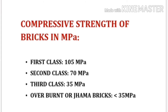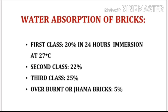Compressive strength of bricks in MPa: first class brick is 105, second class brick is 70, third class brick is 35, and for overburnt or jama brick it is less than 35. Water absorption: for first class brick it is 20 percent in 24 hours of immersion at 27 degrees centigrade; for second class brick it is 22 percent; for third class brick it is 25 percent; and for overburnt or jama bricks it is 5 percent.